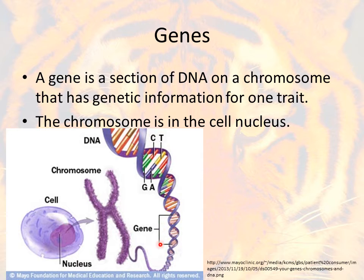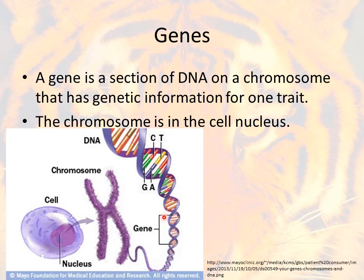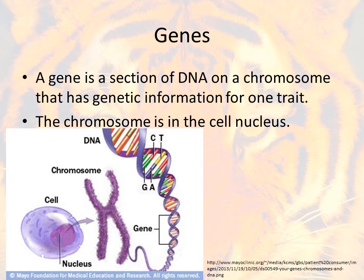Thinking back to those traits — maybe eye color — somewhere you got a gene from your parents for the color of your eyes, one from each parent. That gene is in this part of the DNA that is found within the chromosomes, and those chromosomes are found inside the nucleus, which is inside a cell.